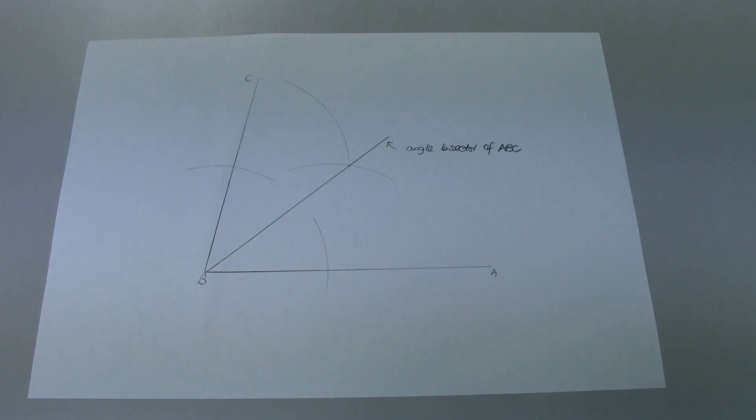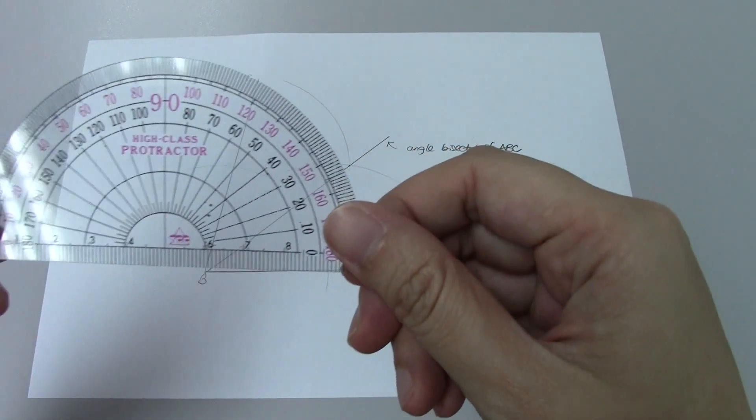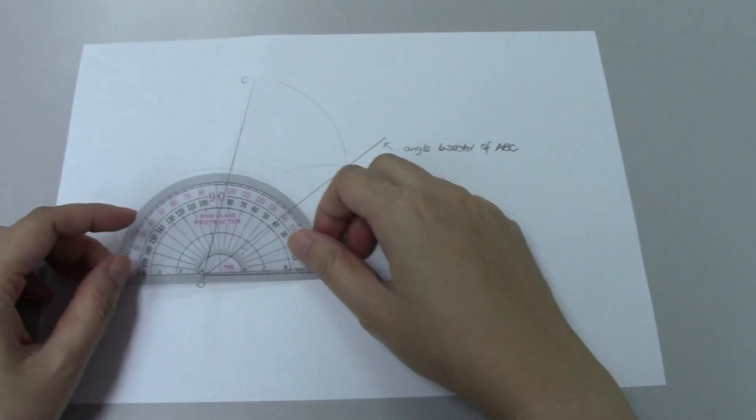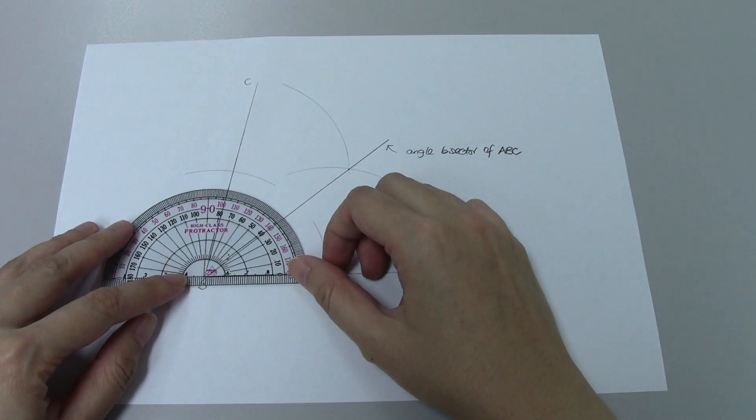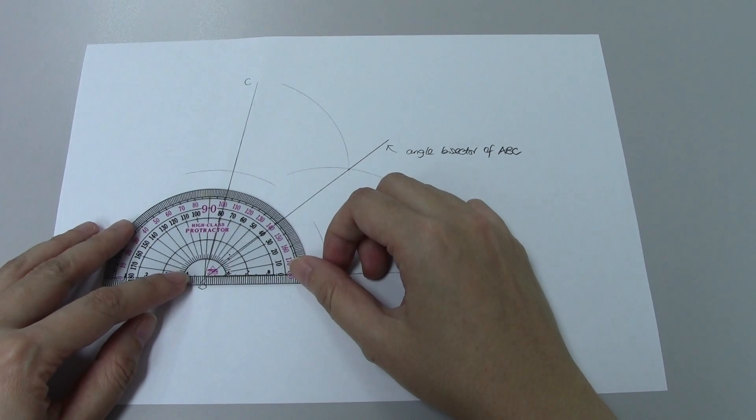Now, to find out if we have done it correctly and accurately, what we can do is make use of your protractor. Measure your angle ABC. So in this case, my angle ABC is 80 degrees.